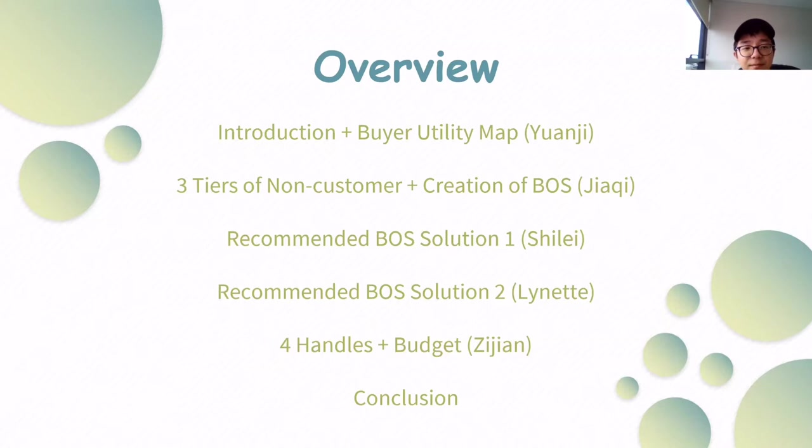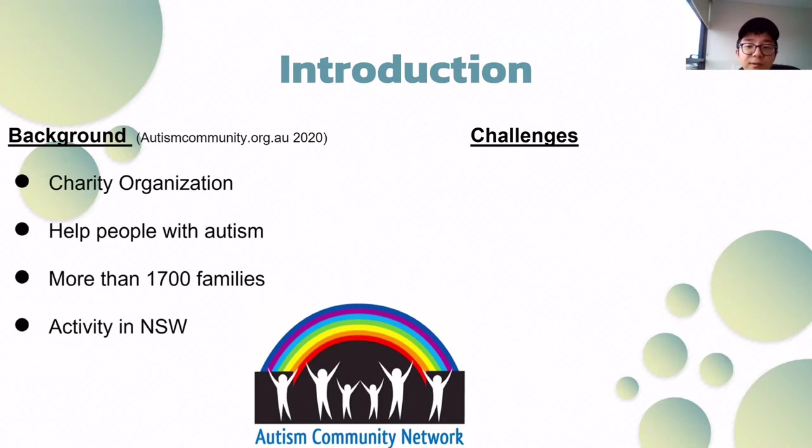Autism Community Network is a charity founded in September 2011 to provide support and services to individuals and families affected by autism. The network now has members in more than 1,700 families across New South Wales.